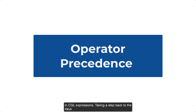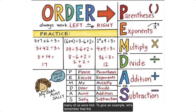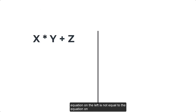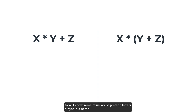Taking a step back to the days when many of us were learning math, you likely remember learning about PEMDAS — or 'please excuse my dear Aunt Sally,' as many of us were told. The equation on the left is not equal to the equation on the right, and this is a great way to explain what we mean by operator precedence, or PEMDAS.